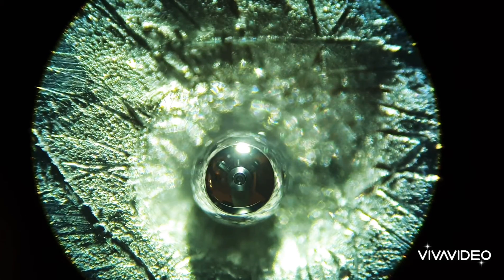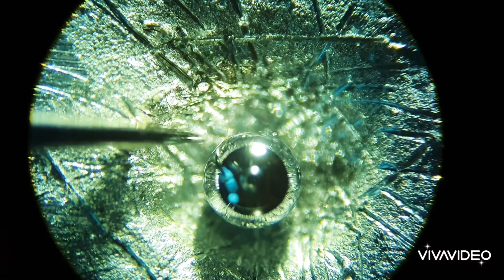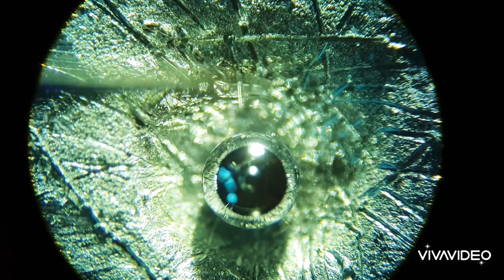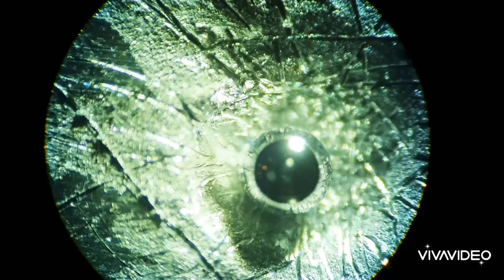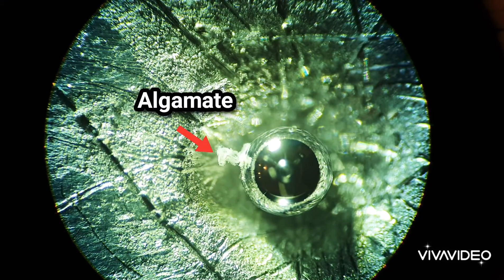However when I found a fresh drop of mercury after shaking my original mercury around and giving it a bit of a poke, I noticed that some aluminium amalgamate had formed.